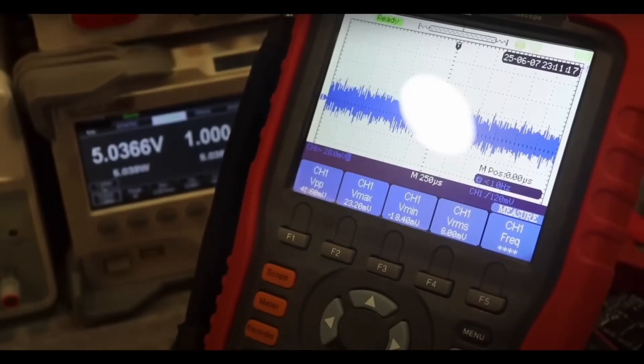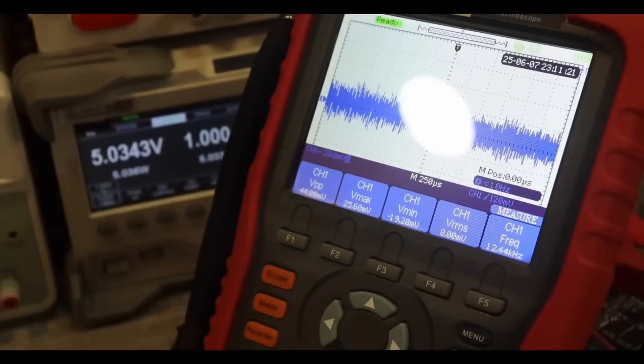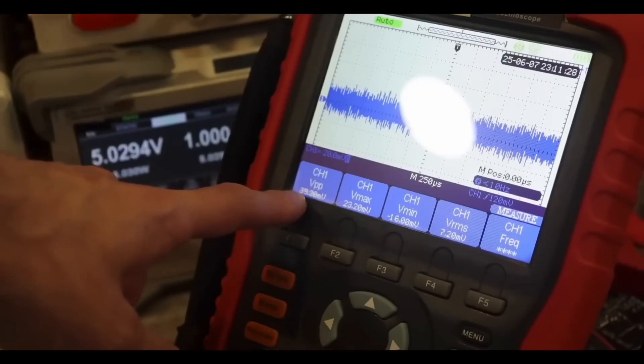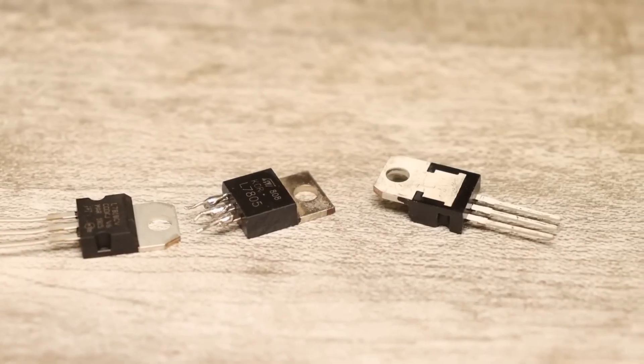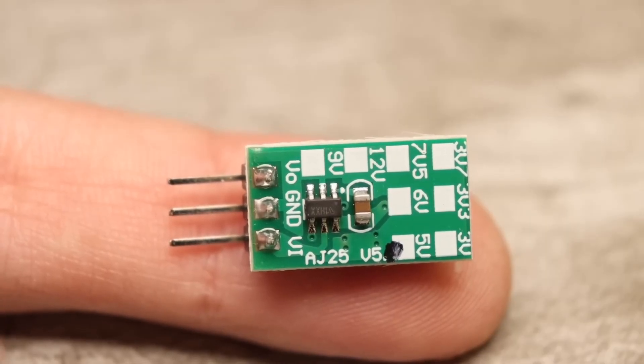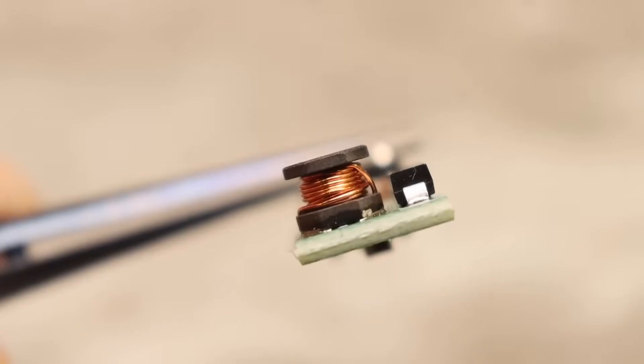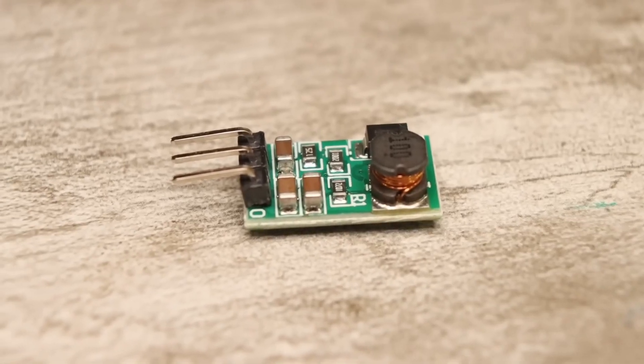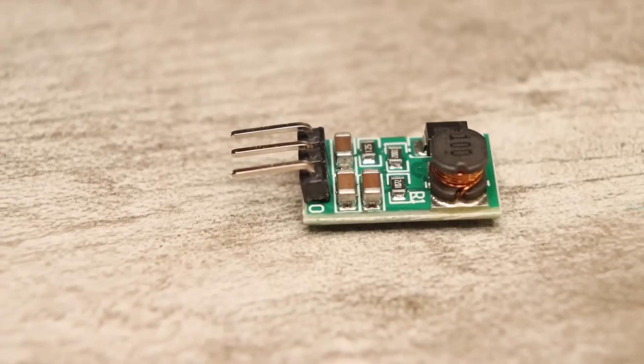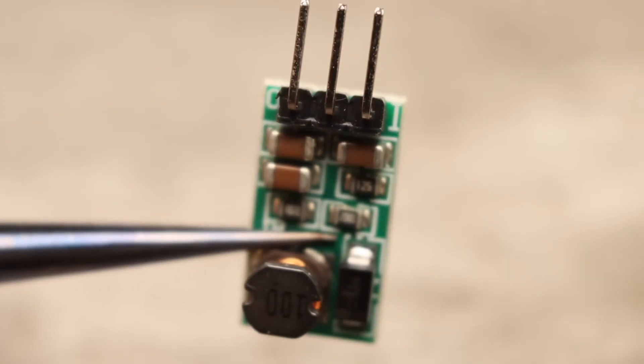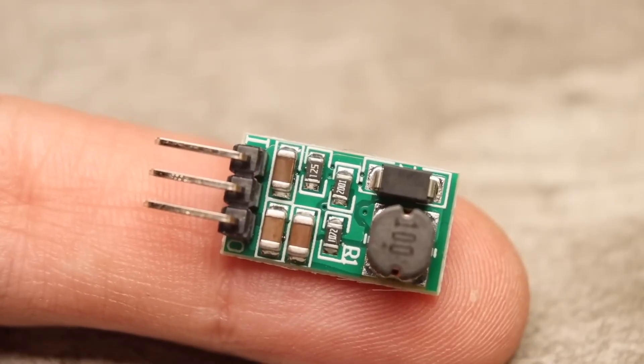And what about ripple? About 50 millivolts peak to peak at a maximum current of 1 ampere without any additional filters or power supply capacitors. Of course, in this regard, they can't compare to linear regulators at all. But, let's be honest, 50 millivolts isn't all that much for such a simple converter. And in a circuit where there are capacitors at the input and output, the ripple will be much lower. For ultra-sensitive loads, of course, linear regulators are the way to go. For everything else, this one will do just fine.